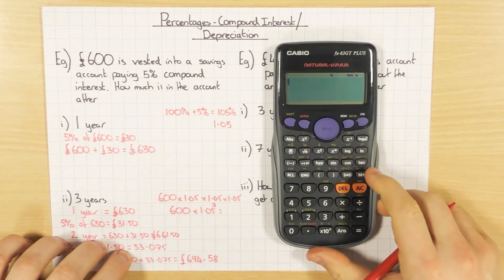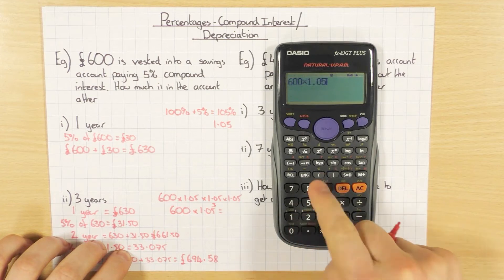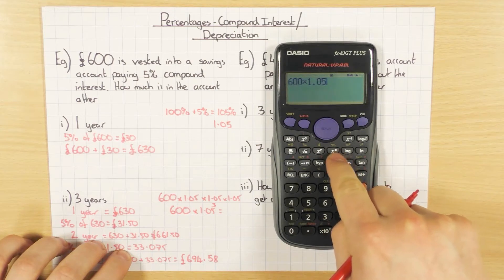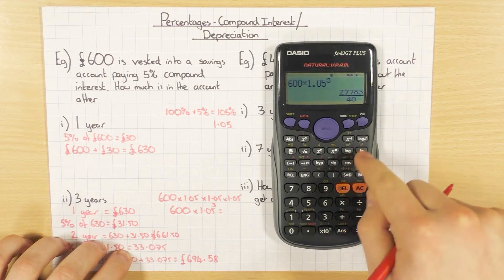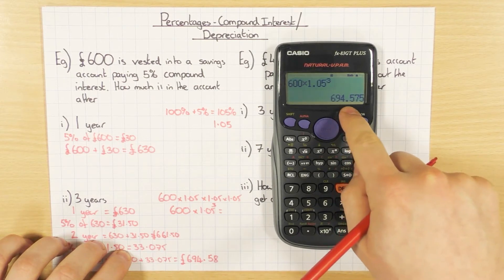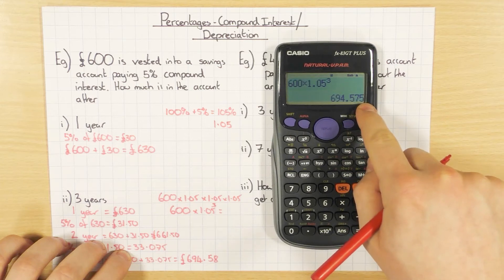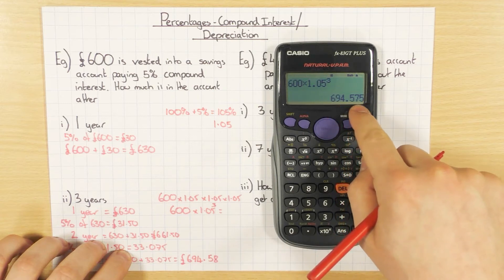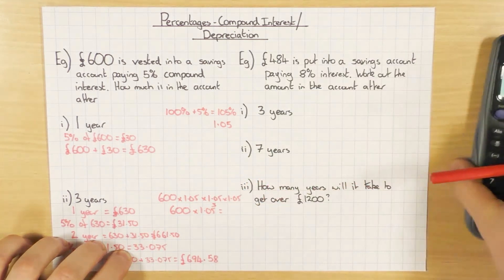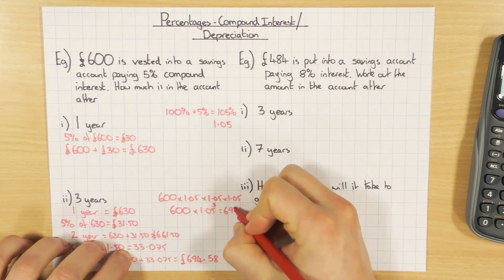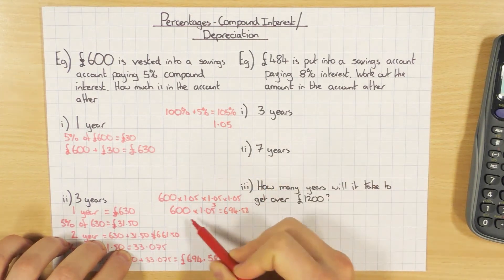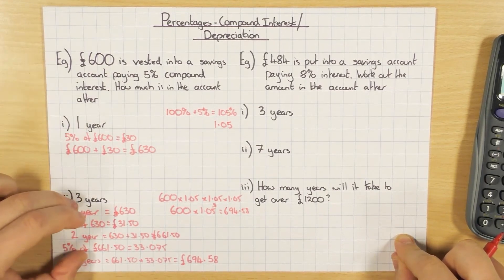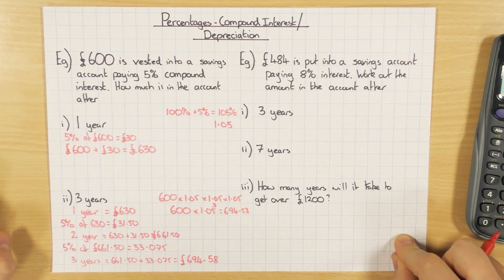When you put that into your calculator — 600 times 1.05 to the power of 3 — you get 694.575, which rounds to £694.58. That's what I got by doing it the long-winded way. So hopefully you can see the benefit of using the decimal multiplier — it's much quicker. That's the method I'm going to continue with for the rest of this video, but you can do it the long way if you prefer.